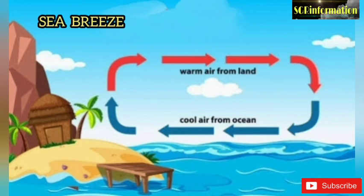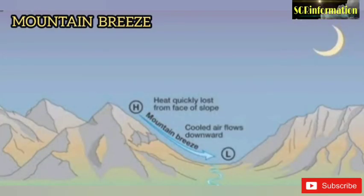Sea breeze: during the daytime, land gets heated more than the adjacent sea and low pressure develops over the land. The warm air over the land, being lighter, moves upward, and its place is taken by cooler air coming from the sea. This is called sea breeze.